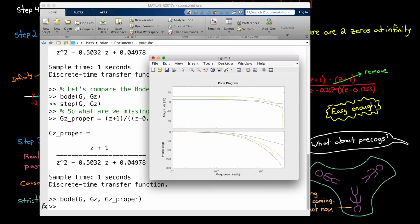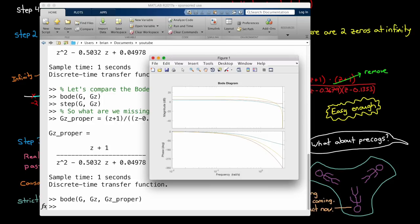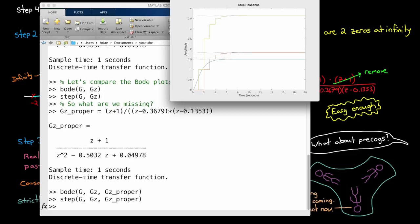And for the step response, our new function, the yellow line, rises a bit more like the continuous system. However, we've screwed up the gain even more. So let's go fix the gain term in step four.